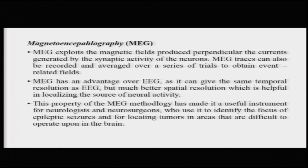Finally, we can talk about magnetoencephalography. MEG exploits the magnetic fields produced perpendicular to the currents generated by synaptic activity in neurons. MEG traces can be recorded and averaged over a series of trials just like EEG, but MEG has a significant advantage: it offers as good a temporal resolution as EEG while providing a much better spatial resolution than EEG or ERP. This property has made MEG a very useful instrument for neurologists and neurosurgeons who have used it extensively to identify the focus of epileptic seizures and locate tumors in difficult-to-operate areas of the brain.